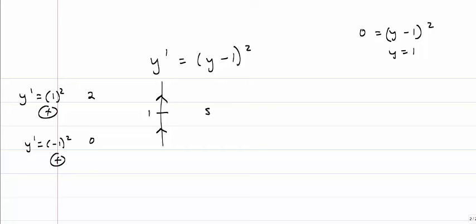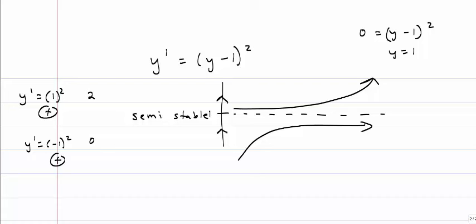So this point is called semi-stable. If the y value is below that critical point, it's drawn to the critical point. If it's above the critical point, it goes away from that critical point. If I wanted to draw the solution curve, it would look like that.